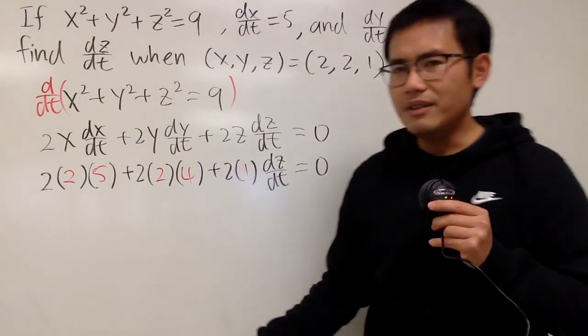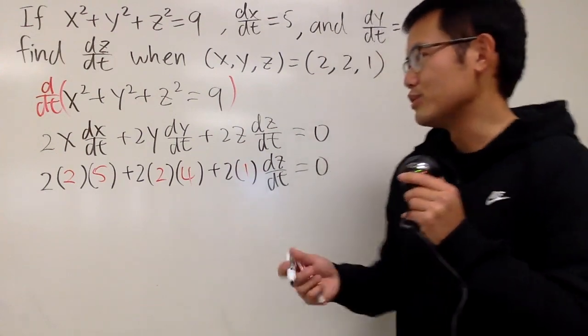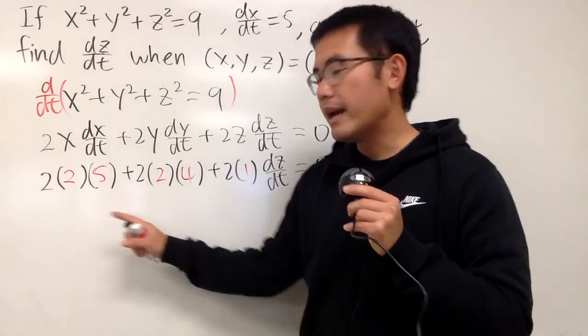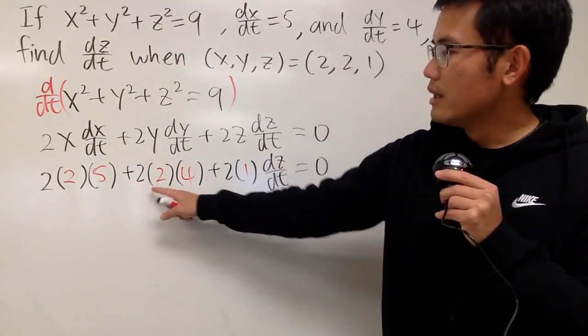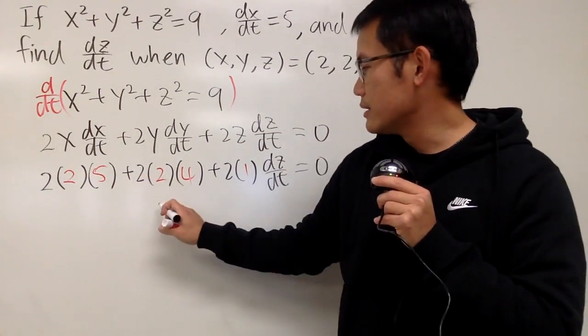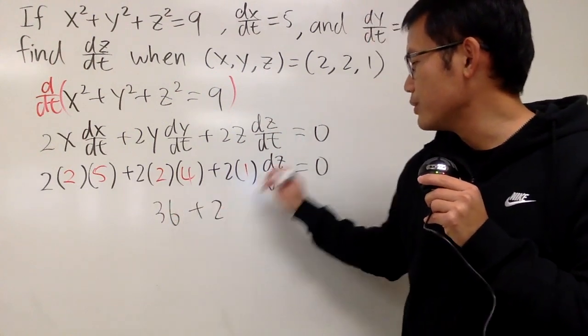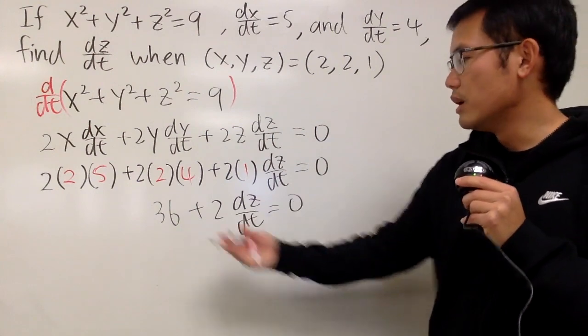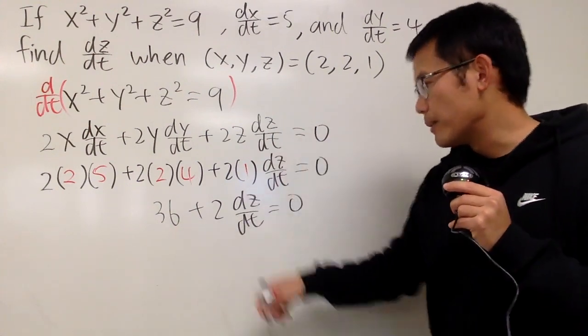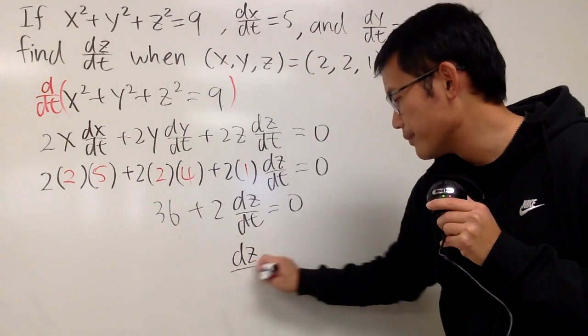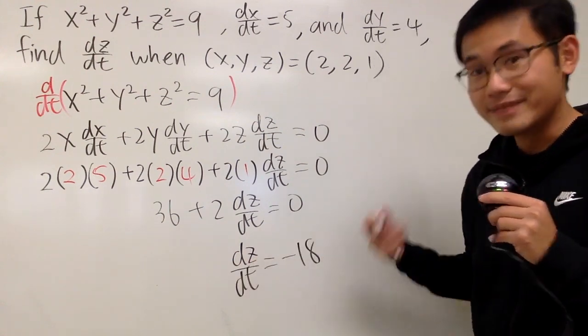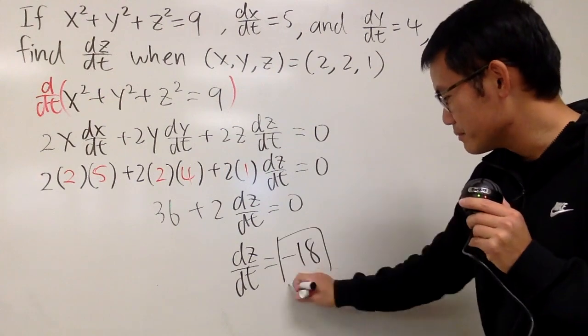And, of course, if you notice, we could have divided everybody by 2, but it shouldn't be too bad. Anyway, let's do this in your head. This right here is going to be 20, and this right here is going to be 16, so this is going to be 36, and then plus 2 dz/dt is equal to 0. Move the 36 to the other side, divide both sides by 2, then we get dz/dt is equal to negative 18. So, this right here is it.